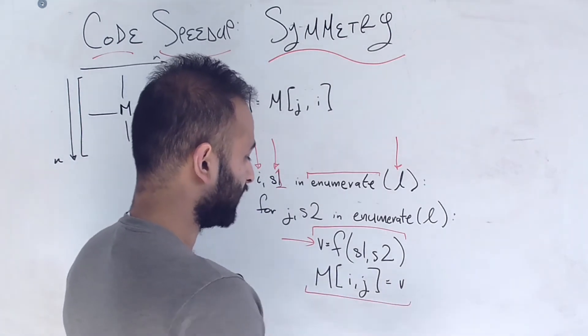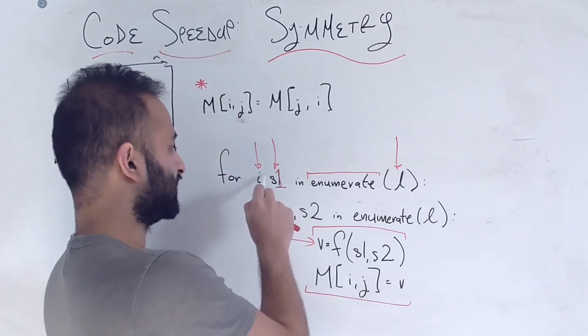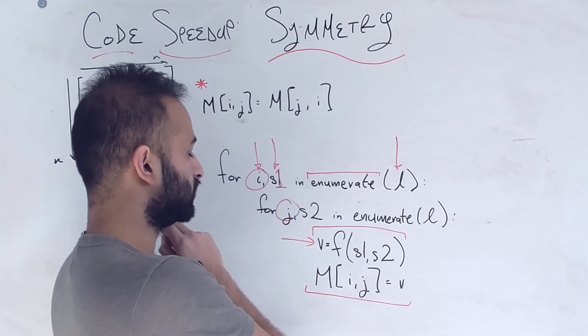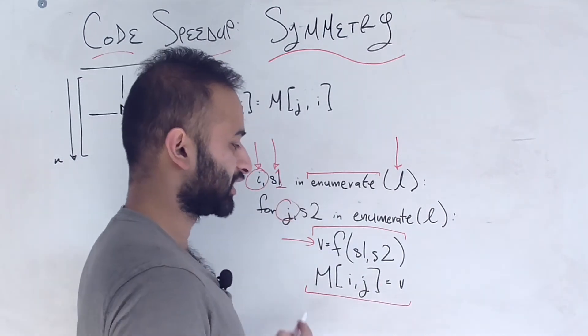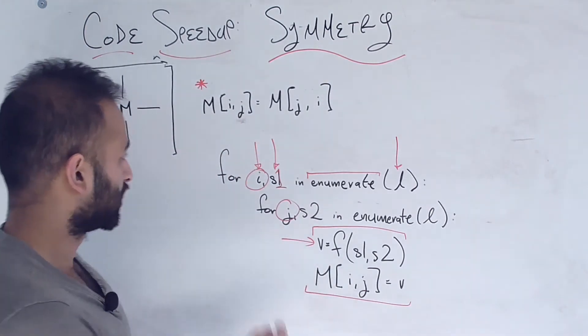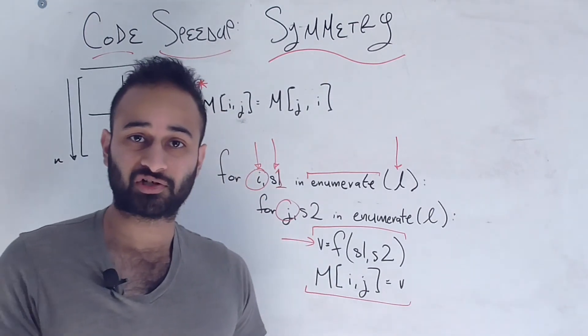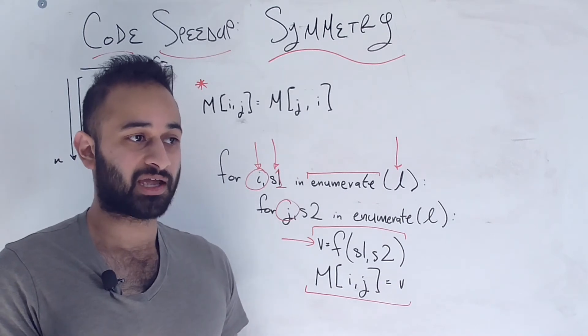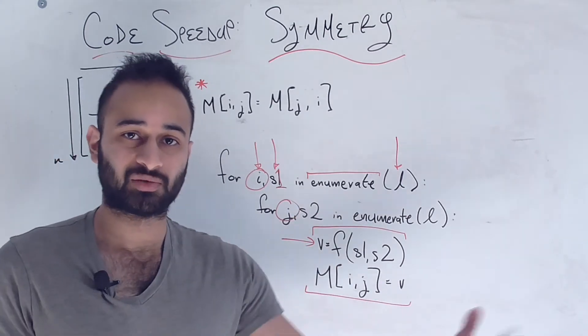We go ahead and say the matrix at ij because that's the index of student 1 and index of student 2 is going to be equal to that similarity score. And this is definitely going to work, right? Because we're just going to iterate over every single entry in the matrix and we're going to say at ij we're going to put the similarity score.